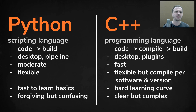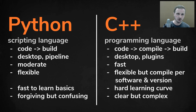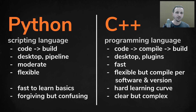So what's the main difference between a scripting language like Python and a programming language like C++? With a scripting language you code, then you create a build and execute it. With a programming language like C++ you code, then you compile it from human-readable code to machine code, and then you can build and execute it. So there's a step in between.